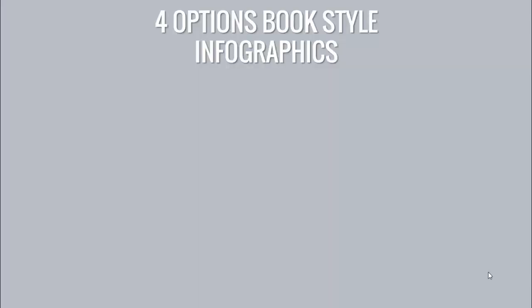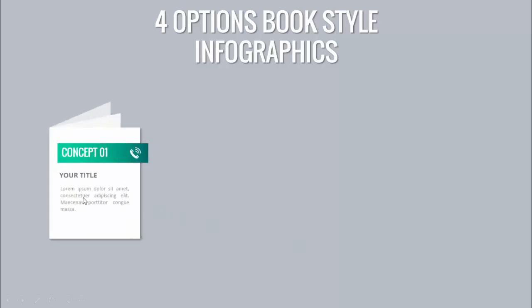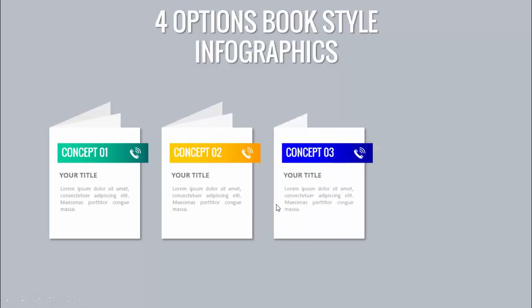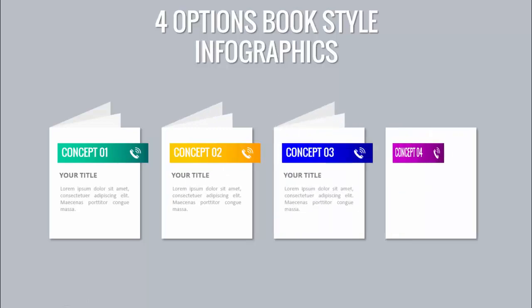In today's tutorial I'm going to show you how to make a four-options book-style infographic slide in PowerPoint. This is how the slide works: when you click, the first option comes in the form of a book. You can put your concept one along with an icon, add detailed text, and on each click it shows concept two, concept three with different colors, and then concept four.